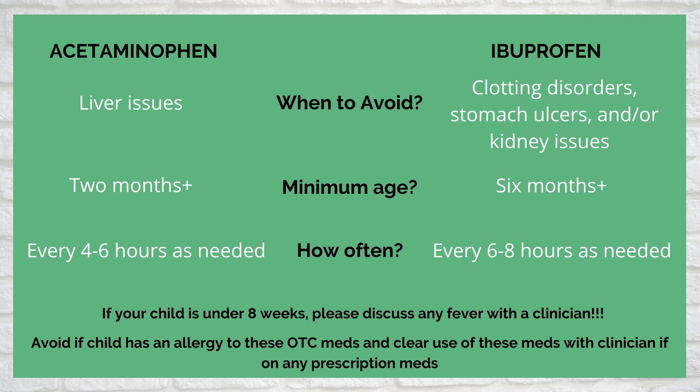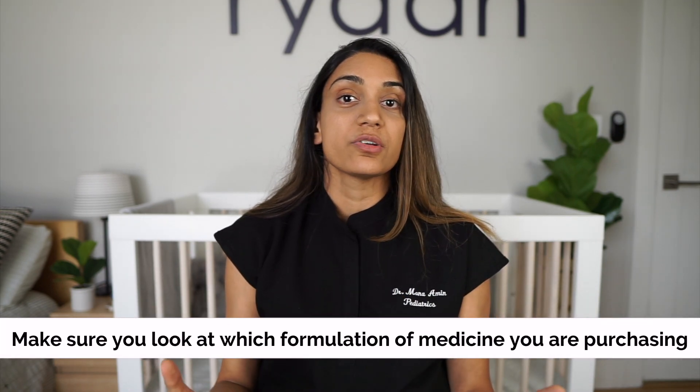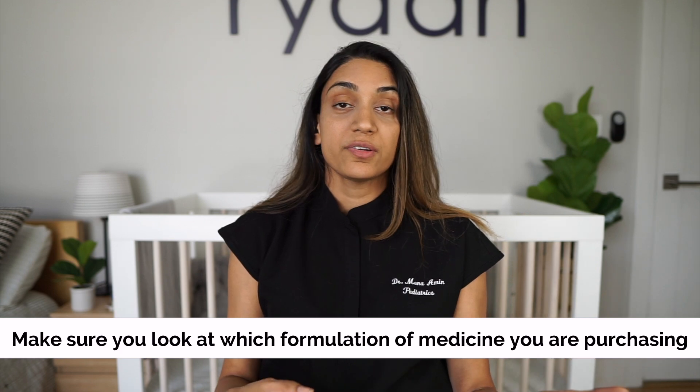How often can these meds be given? Acetaminophen can be given every four to six hours. Ibuprofen can be given every six to eight hours. This does not mean you have to give the medicine on that schedule. This spacing is between doses of that same medicine. Before we go into dosing, it's important to know what you're picking up off the shelf, because there are different formulations available over the counter: infant ibuprofen, children's ibuprofen, infant acetaminophen, and children's acetaminophen.